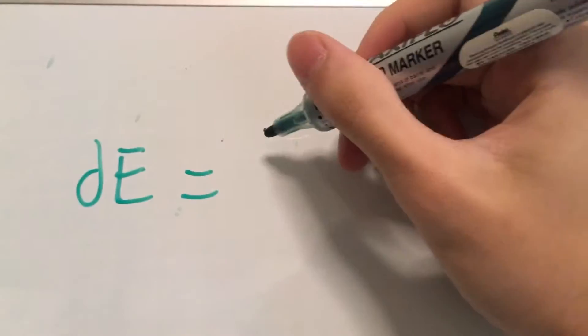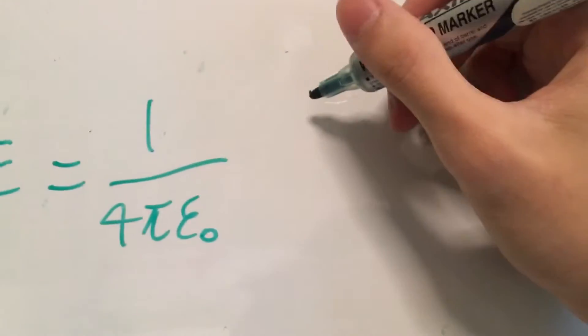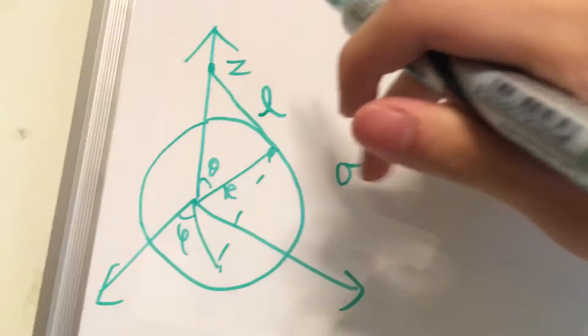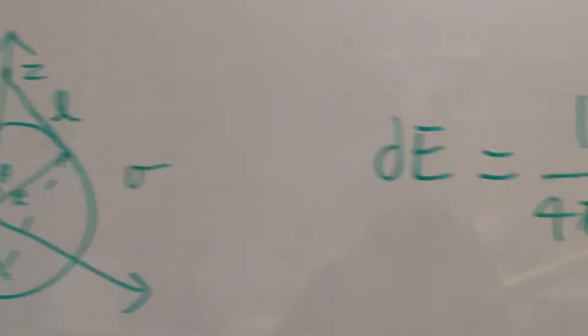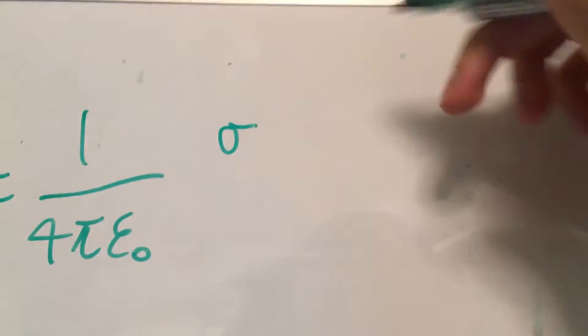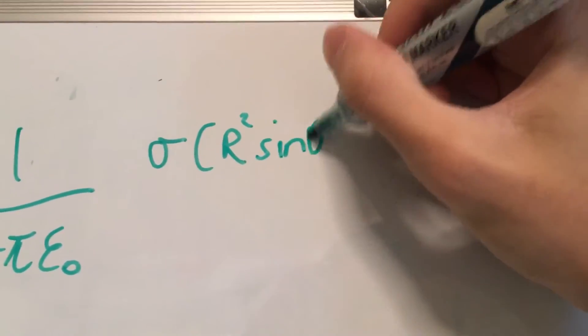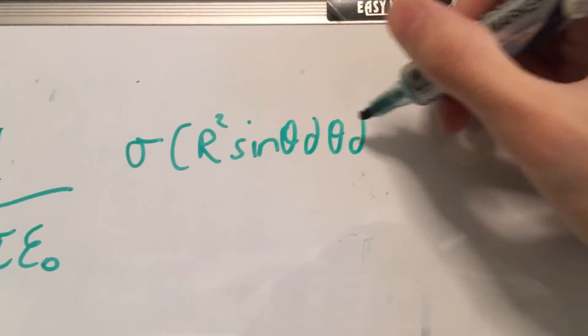So what's this tiny piece of electric field? That's just Coulomb's law. And what's the charge? The charge is the charge density multiplied by a tiny piece of the surface, and that is sigma multiplied by a tiny piece of the area, and that will be r squared sine theta d theta d phi.